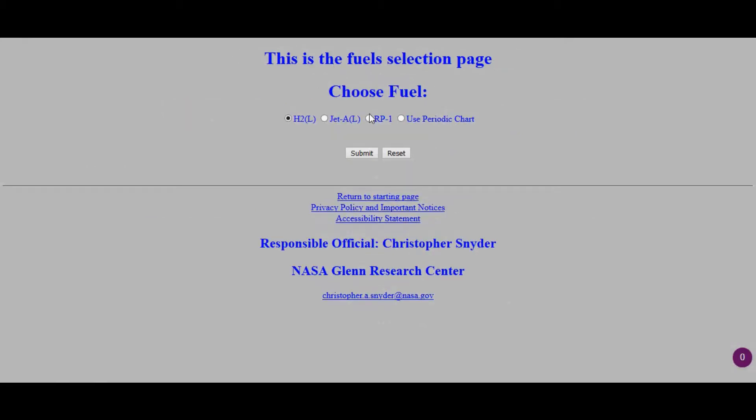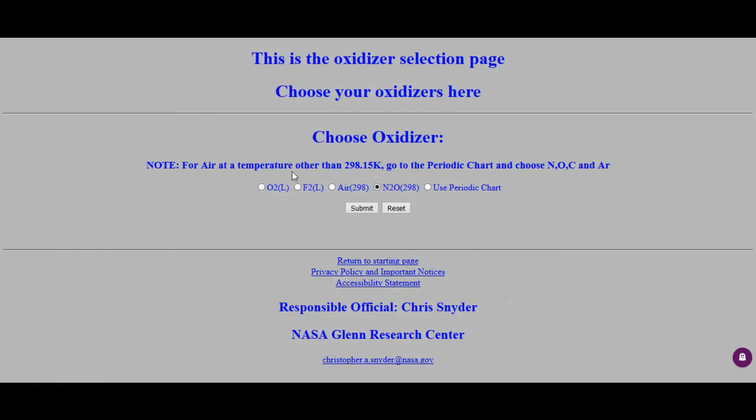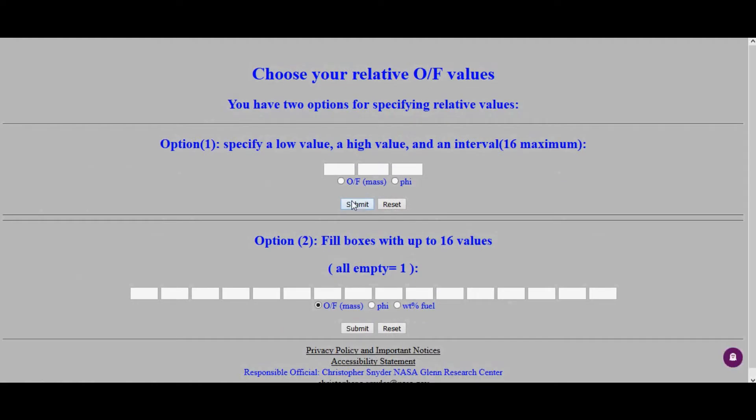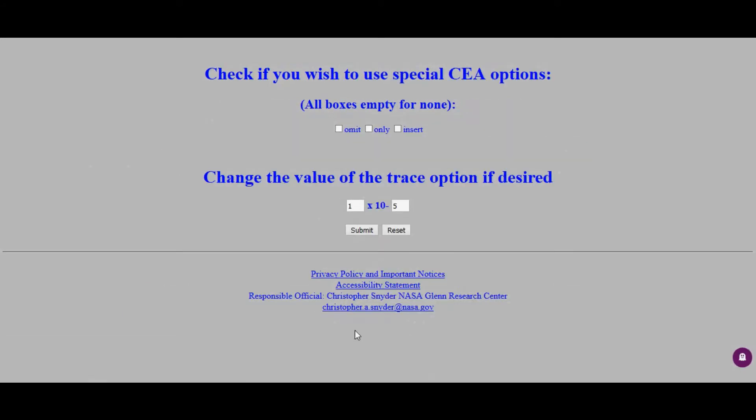Now we need to choose the fuels. The fuel we're using is RP1, we'll click submit. The oxidizer is liquid O2 or LOX, click submit. And then in here we're choosing our relative OF values, and again I'm going to specify one of these boxes here. We know that it is 2.27 to 1 oxidizer to fuel on a mass basis, and then we can click submit. Don't change anything on here, click submit.